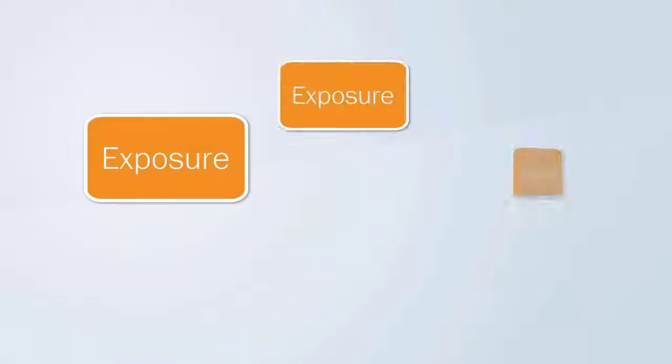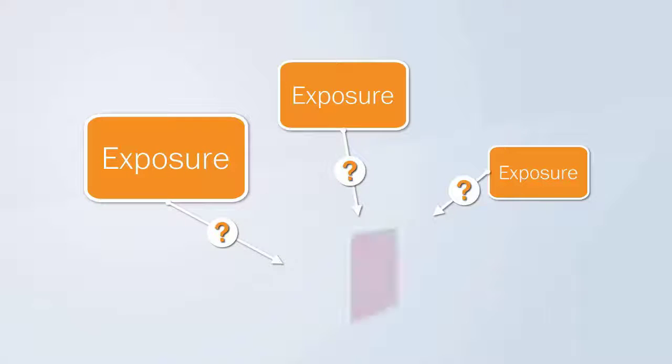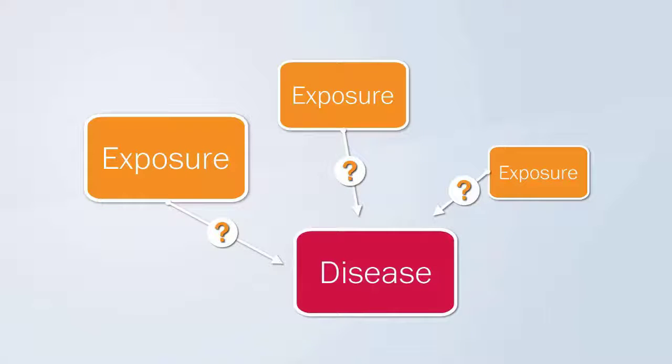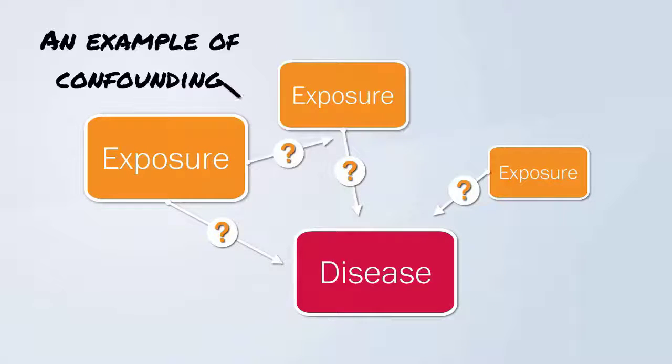Much of epidemiology is concerned with establishing associations between exposures and the risk of disease. Confounding is about alternative explanations for the effects seen between the exposure of interest and the outcome.